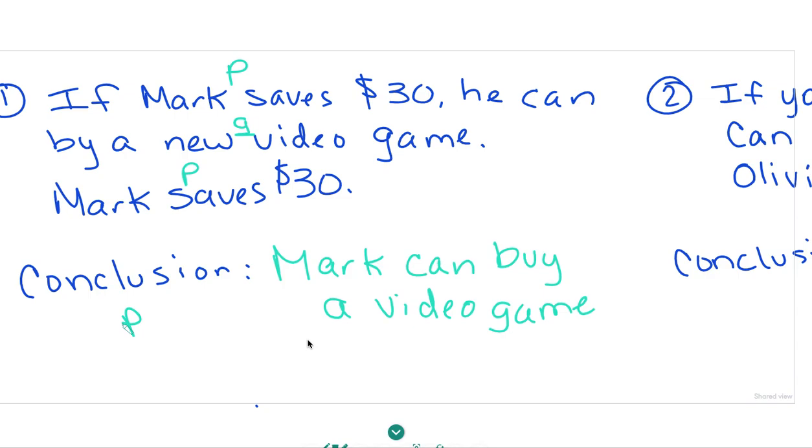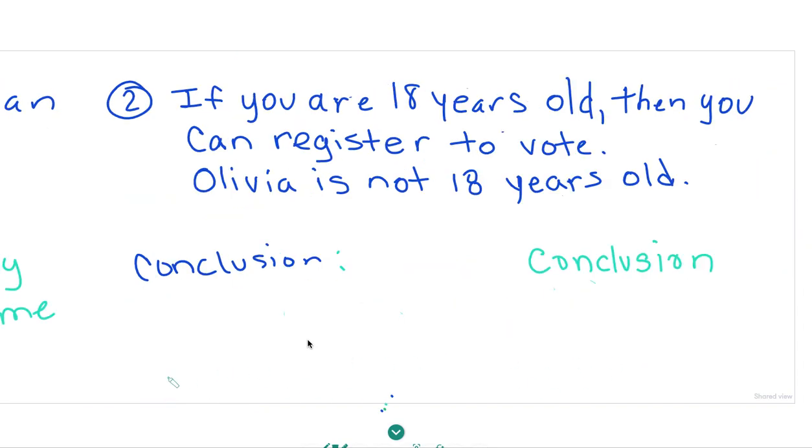So if P is true, then Q. P is true, therefore Q is true. Okay, let's look at another example.